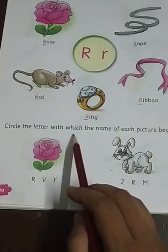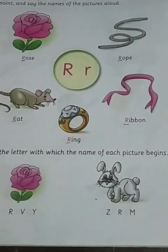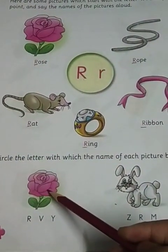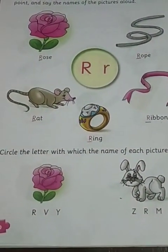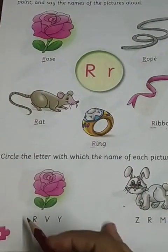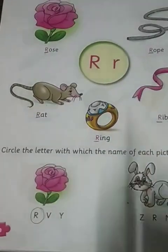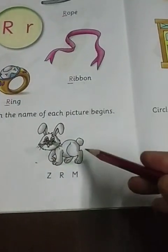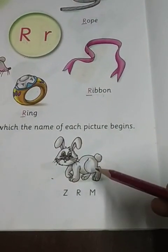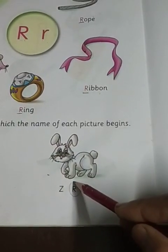Circle the letter with which the name of each picture begins. This is very easy to do, so do it by yourself. This is Rose — and Rose begins with which letter? Circle it. Check whether you circled correctly. The second picture is a rabbit, and rabbit starts with letter R.